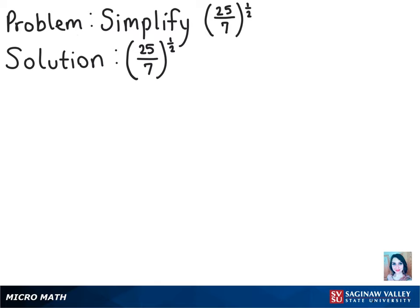The first thing that we need to know when simplifying this problem is that when a fraction is raised to a fractional exponent, or any other exponent, the numerator and denominator both get raised to the exponent. So we can rewrite this as 25 to the 1/2 power over 7 to the 1/2 power.